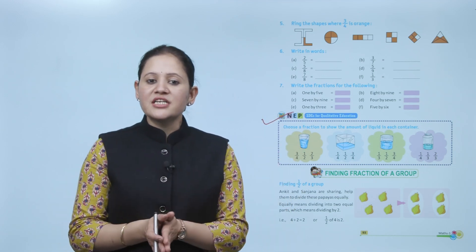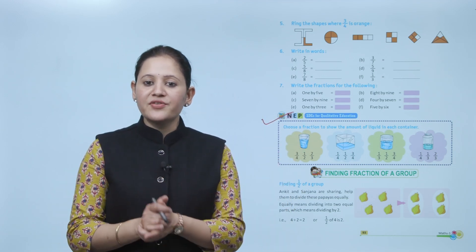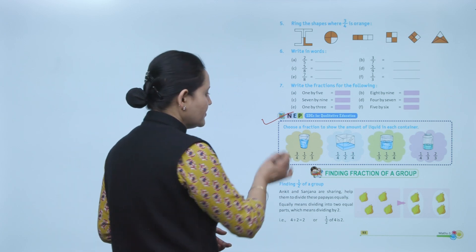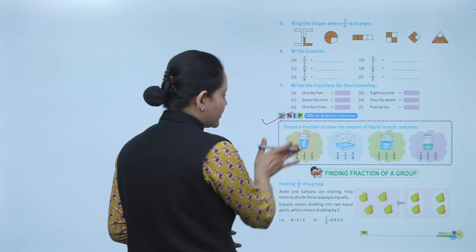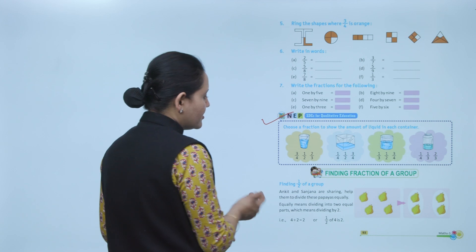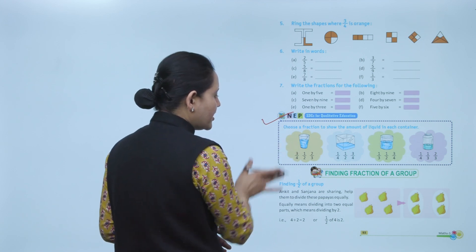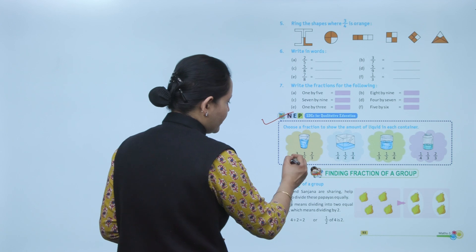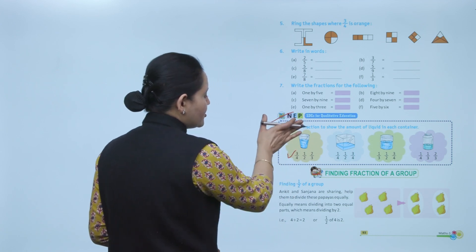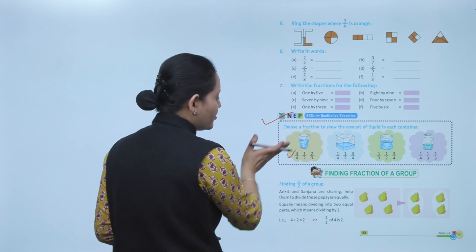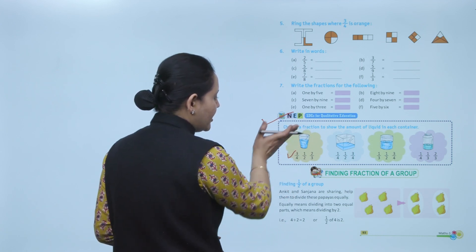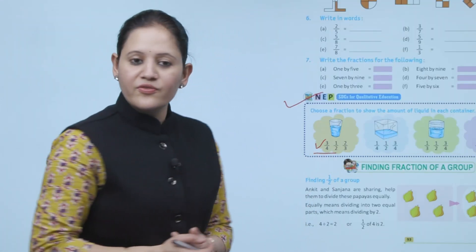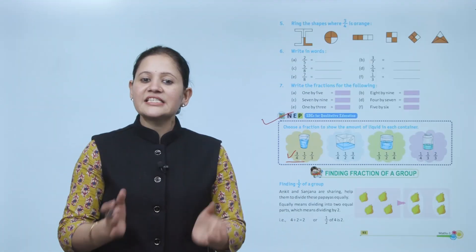Choose a fraction to show the amount of liquid in each container. If you see the glass, it's filled more than half, so I will write 3 by 4, because the total glass's 3 fourth part is filled with water. So I will write 3 by 4.